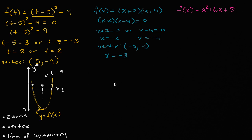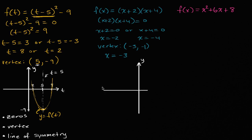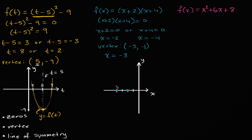We can graph that quickly. Everything is happening for negative x values, so we sketch accordingly. We have zeros at x = -2 and x = -4, and the vertex is at (-3, -1). So the graph of y = f(x) looks like a parabola opening upward, touching the x-axis at -2 and -4, with its minimum at (-3, -1).